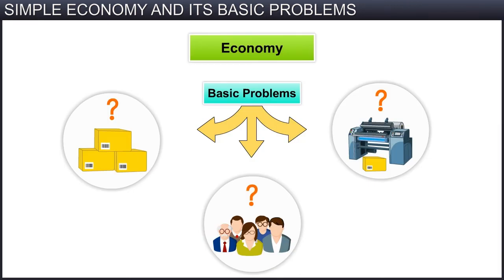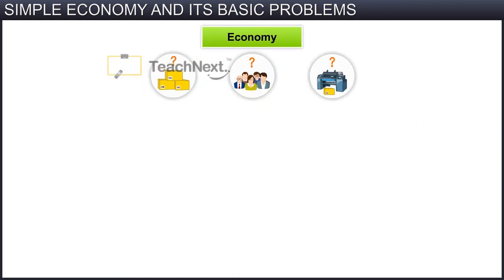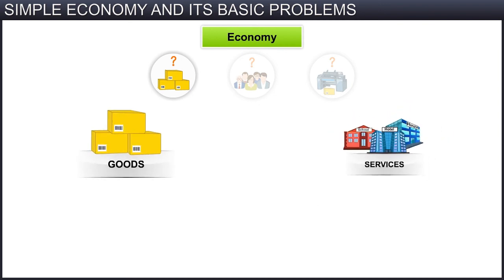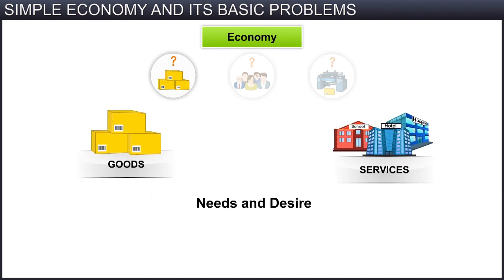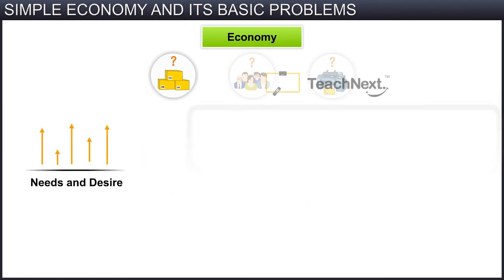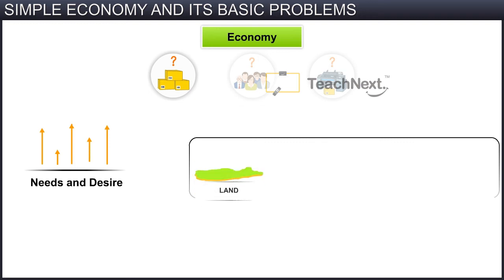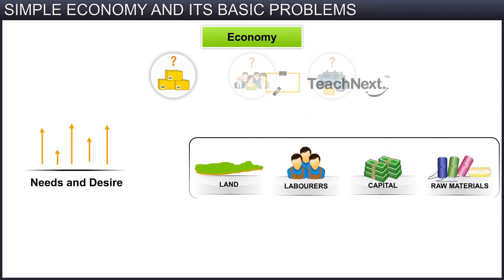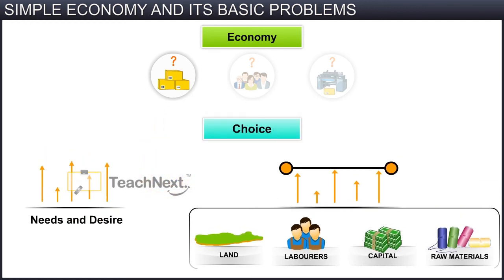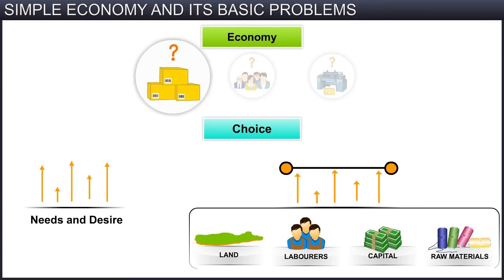Let us now look at each of these economic problems in detail. We will first start with the problem of what to produce and in what quantities. An economy produces goods and services to satisfy the needs of its people. As we have seen, these needs are infinite. However, resources such as land, labour, capital, and raw materials are limited. So this mismatch of limited resources and unlimited human requirements creates the problem of choice — that is, what and how much to produce.